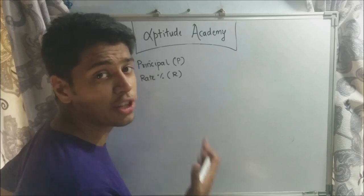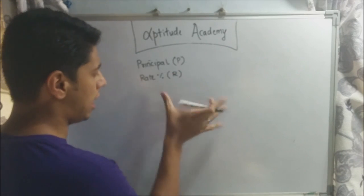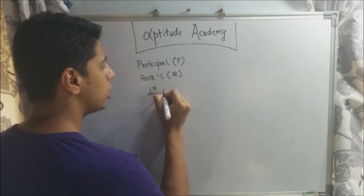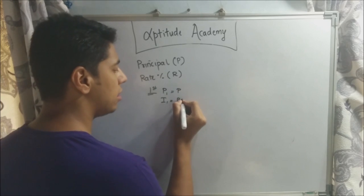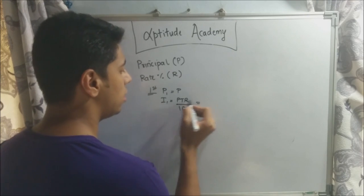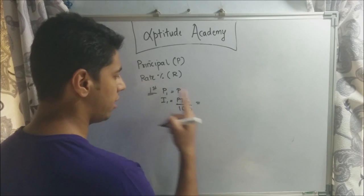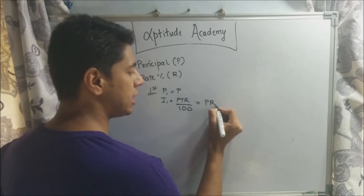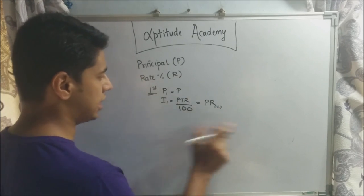For the generalized formula, let the principal be P and the rate be r. For the first year, principal P₁ = P, and interest I₁ = PTR ÷ 100. Writing r in percentage terms and with time t = 1, I₁ = P × r%. So your interest for the first year is Pr%.